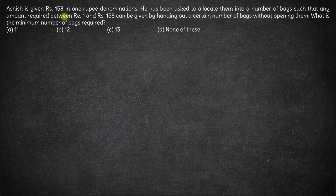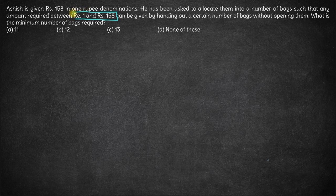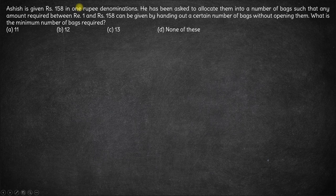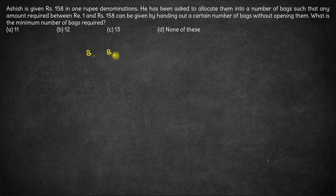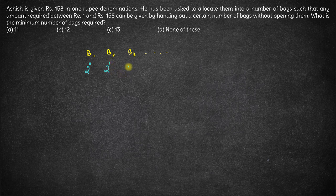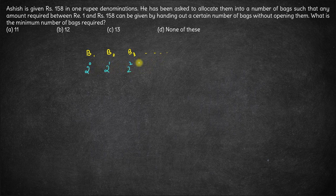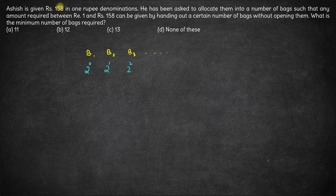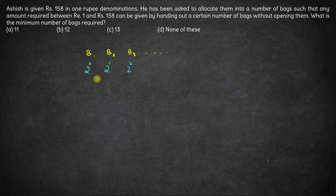If you want to give any amount between 1 to 158, it can be written as sum of powers of 2. So basically what is required is each bag - bag 1, bag 2, bag 3 and so on - should contain coins which are powers of 2. If bag 1 contains 2 to the power 0, bag 2 must contain 2 to the power 1, bag 3 must contain 2 to the power 2, such that we will have bags whose sum becomes 158 or less than 158.